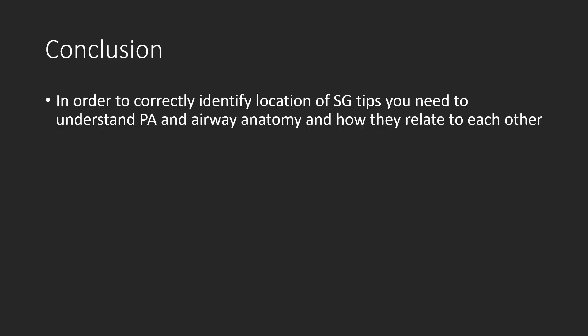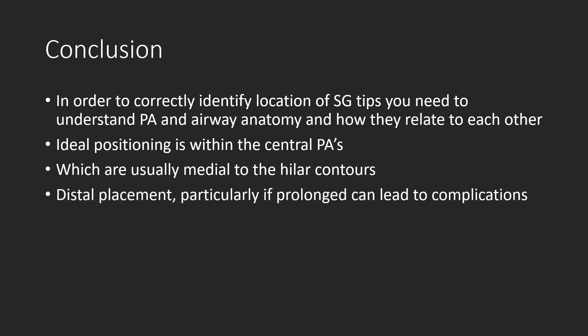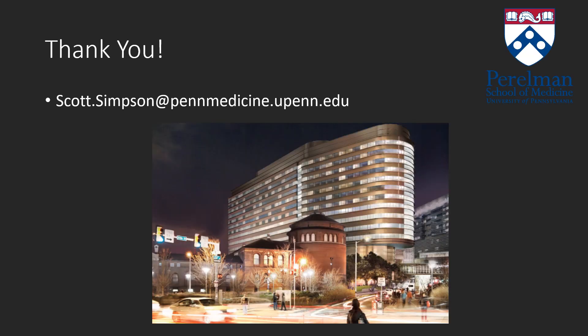In conclusion, in order to correctly identify the location of Swan-Ganz catheter tips, you need to understand the pulmonary and airway anatomy as well as how they relate to each other. Ideal position is within the central pulmonary arteries, which are usually medial to the hilar contours. This is important because distal placement, particularly if prolonged, can lead to complications. Thank you.